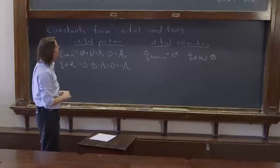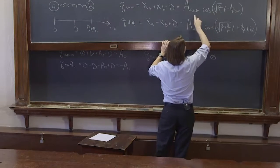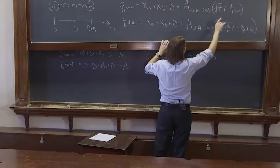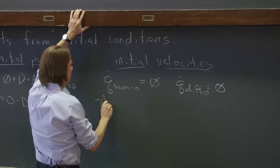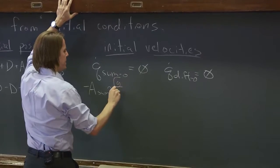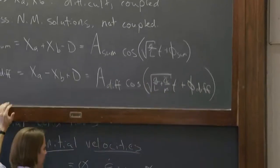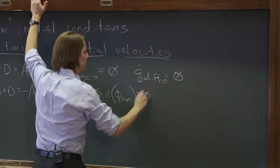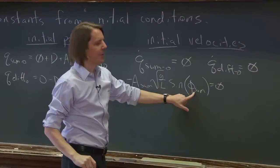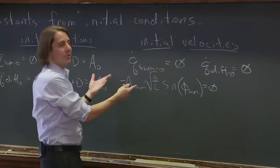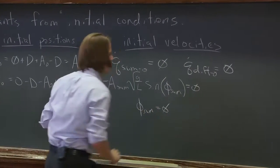The time derivative of q_sum would be A_sum times the square root of g over L. Cosine becomes negative sine at time equals 0. So it would be minus A_sum square root of g over L times the sine. But at time equals 0, this term is 0, so you're just left with phase equals 0. That tells us phi_sum has to be 0. We don't want to make the amplitude 0, because that would be trivial - that means it's not moving. So phi_sum is 0.